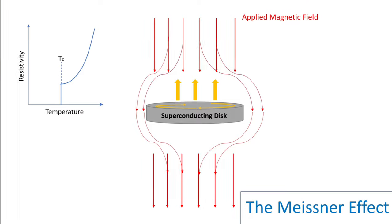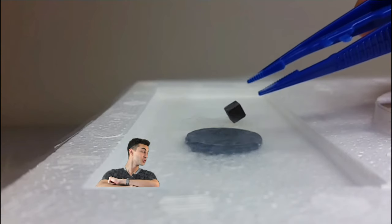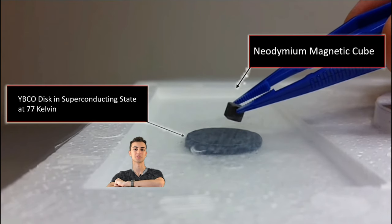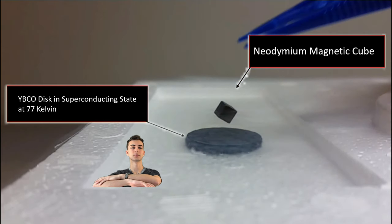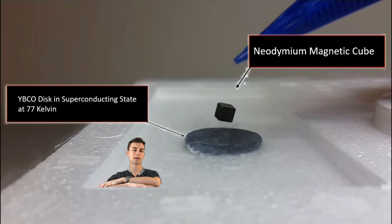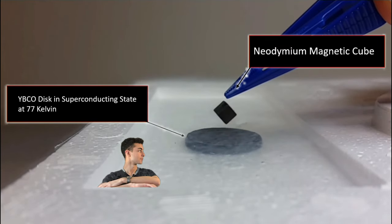This disk behind me is being submerged in super cold liquid nitrogen in order to get it down to its critical temperature. This is what is allowing it to have zero electrical resistivity and to completely expel and repel the magnetic field lines coming from the neodymium magnetic cube. That's why it's levitating.